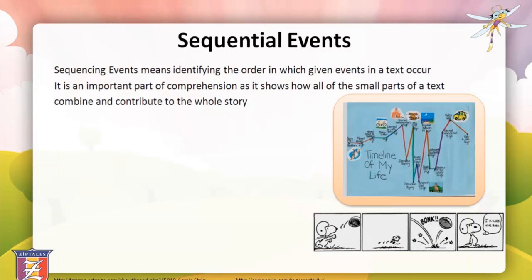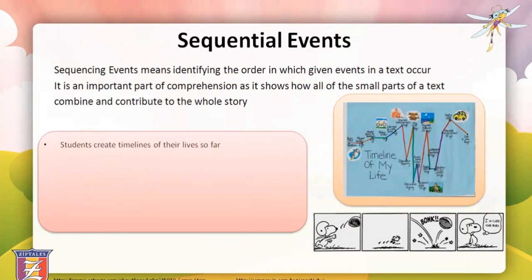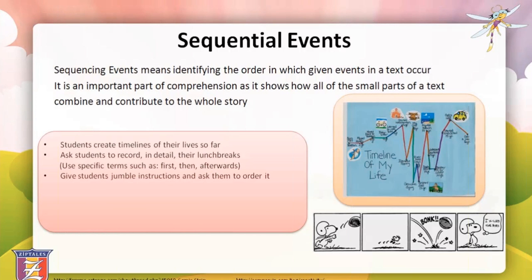We'll move on to identifying a sequence of events. Sequencing events means identifying the components of a text in the order that they happen. It's an important skill because it allows readers to integrate a text's individual parts to create an overall framework. Some suggested activities could be that students create timelines of their own lives indicating major events — their birth, starting school, birth of siblings, or major family holidays. Or students could record what they did during a lunch break at school, using words that show sequence such as first, then, after that, to order the events.